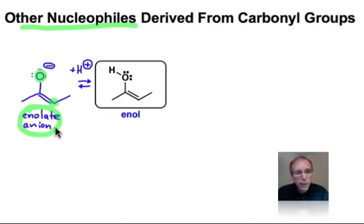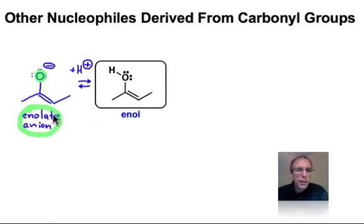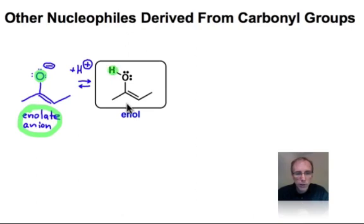Closely related to the enolate anion is its conjugate acid, the enol. And if we were to protonate the enolate anion at the oxygen position rather than at the alpha carbon, we would end up with the structure that's shown here.